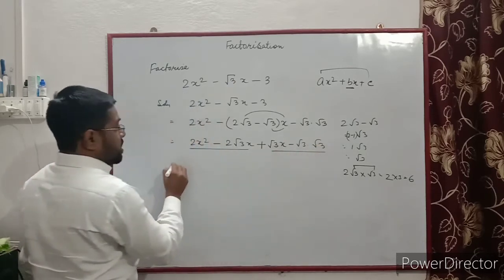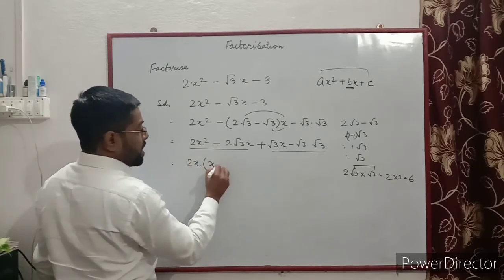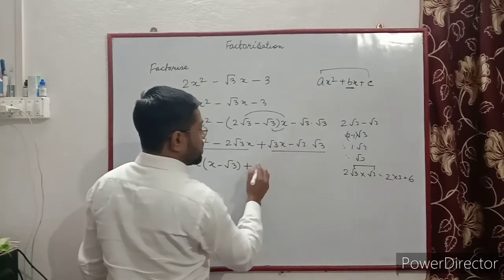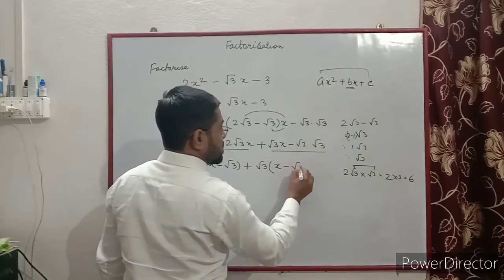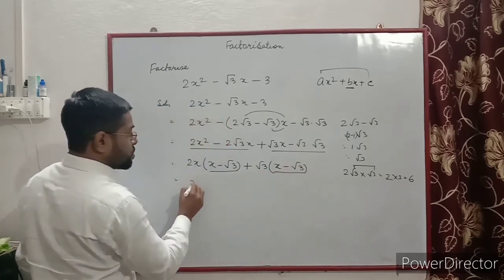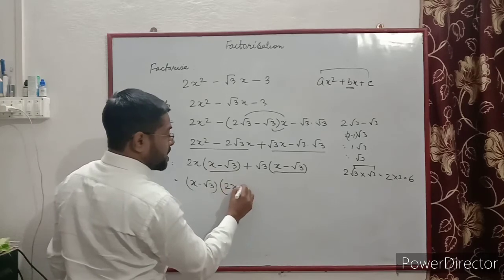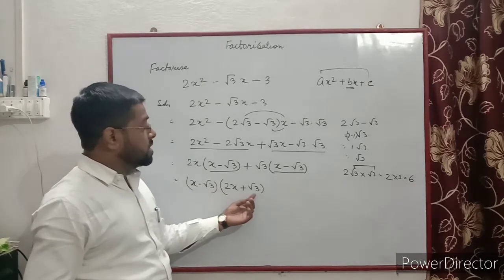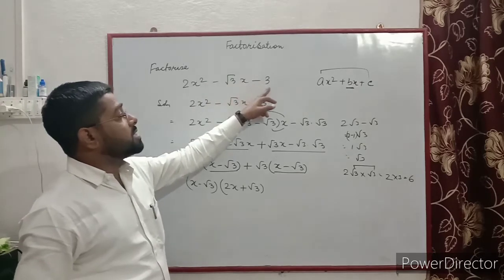From the first group 2x is common, so 2x(x − √3). From the second group √3 is common, so √3(x − √3). Now (x − √3) is common, take it out: (x − √3)(2x + √3). So (x − √3) and (2x + √3) are the factors of 2x² − √3·x − 3. That is the answer.